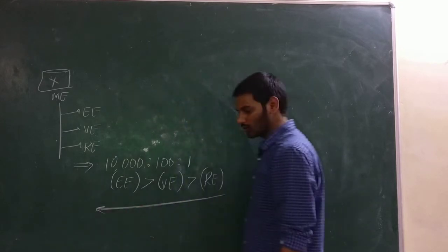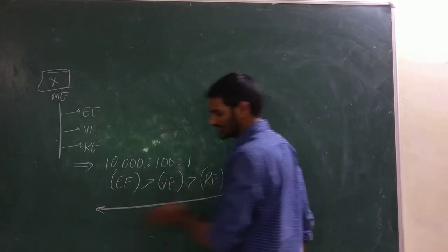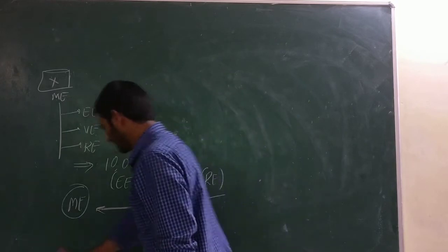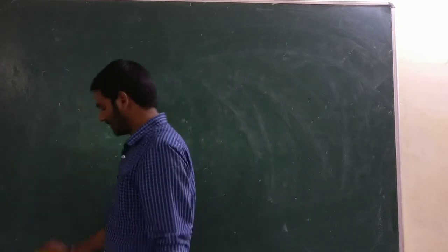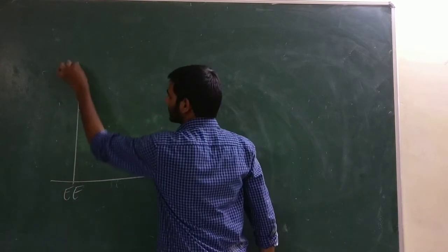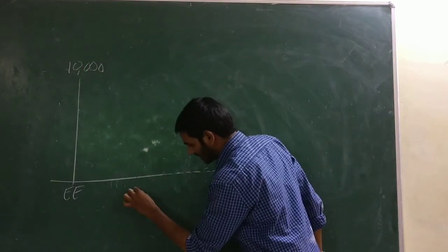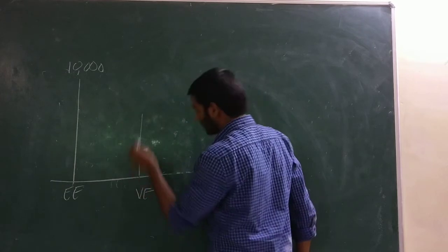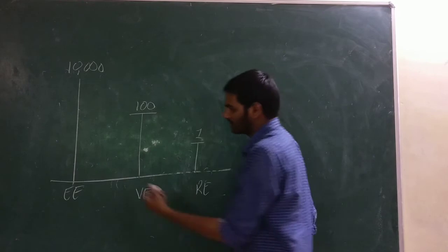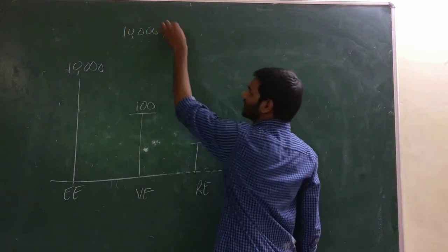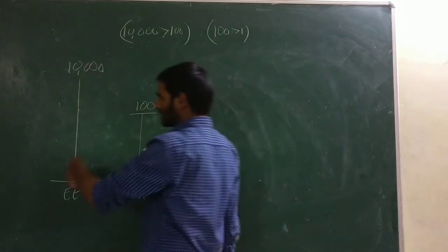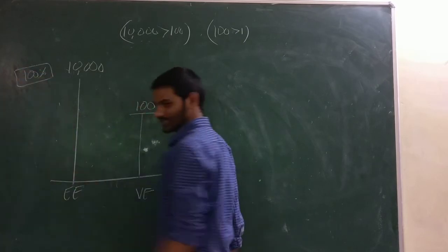The output of electronic energy, vibrational energy, and rotational energy together makes up the molecular energy of the sample. Based on energy levels: electronic energy levels are at 10,000 units, vibrational energy levels are at 100 units, and rotational energy levels are at 1 unit. In general terms, 10,000 is always greater than 100, and 100 is always greater than 1.